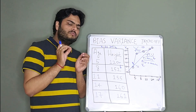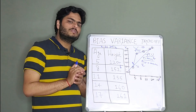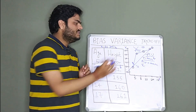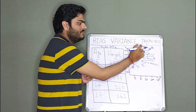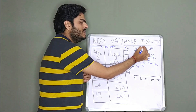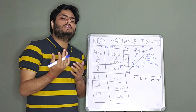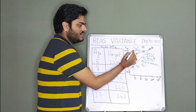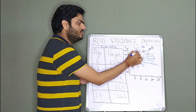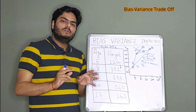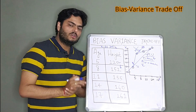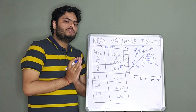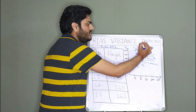A model is said to have high variance if, the moment you change the training data — such as adding a new point — your entire model changes. In the case of f2, it will have to pass through this new point, so the entire f2 will change. This is the key meaning of variance.